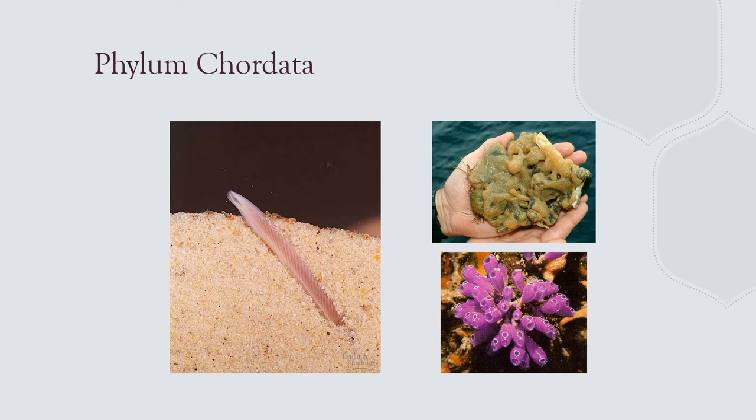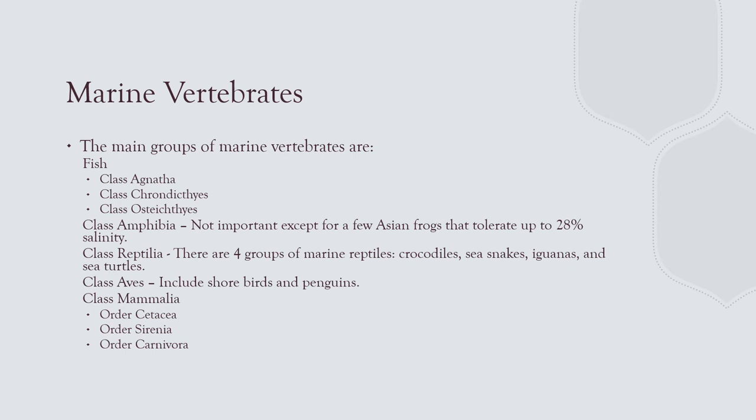Chordates can be invertebrate — they do have a nerve cord. Amphioxus and then you have sea pork and sea squirts, both belonging to a group called tunicates. Larval tunicates resemble fish very closely, but adult tunicates are filter feeders. Then you have classes of marine vertebrates: Agnatha are the jawless fish — very simple lampreys and hagfish (slime eels). Chondrichthyes are the cartilaginous fish — sharks, skates, and rays.